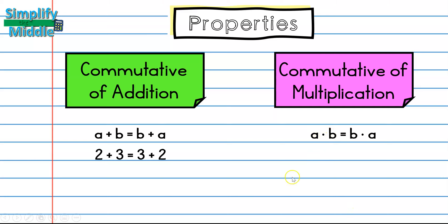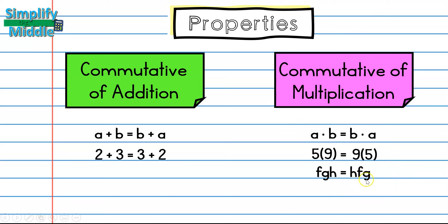In multiplication, we can use a dot, parentheses, or a variable next to another variable or number to show multiplication. So 5 times 9 — if I move the numbers, I end up with 9 times 5. These are the same thing because both give me the same answer: 2 plus 3 is 5 and 3 plus 2 is 5. Another example would be f times g times h, which is the same thing as h times f times g.